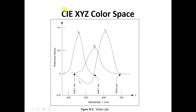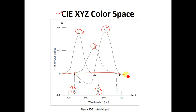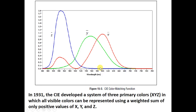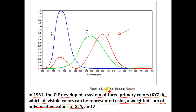This is the CIEXYZ color space. If you see, we have B, G, and R curves, with reference points at 438.1 nm and 546.1 nm. However, in this model there is a negative value — we can see a zero line with some negative components. Because of this problem with the original CIEXYZ color space, in the year 1931 CIE developed a system of three primary colors in which all visible colors can be represented using a weighted sum of only positive values of X, Y, and Z. In this way, the CIE model is used in industries, especially for color matching functions.